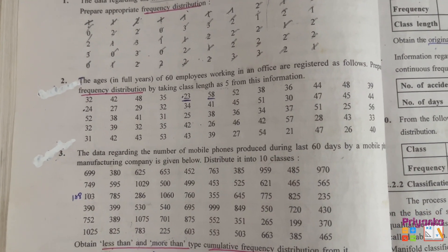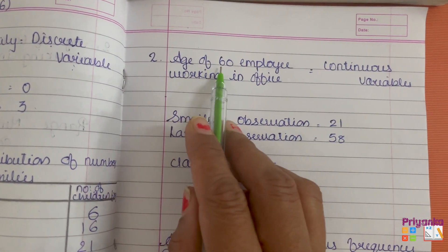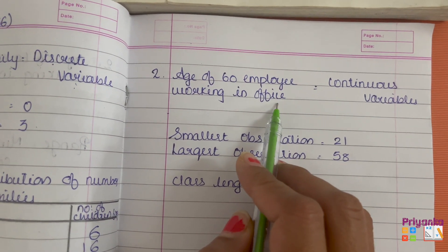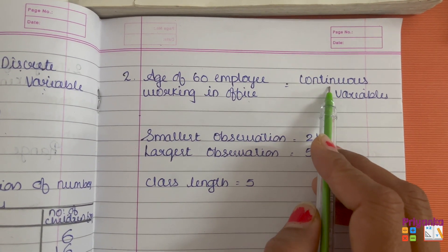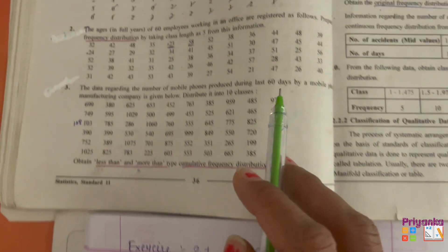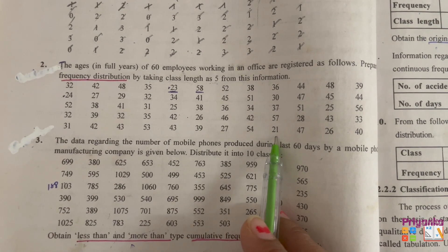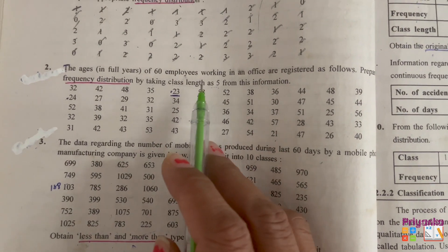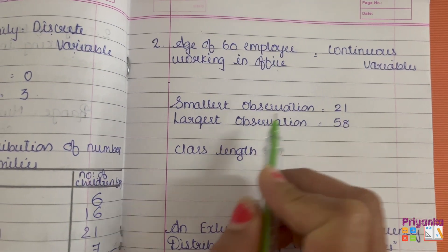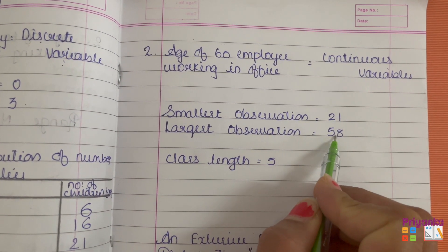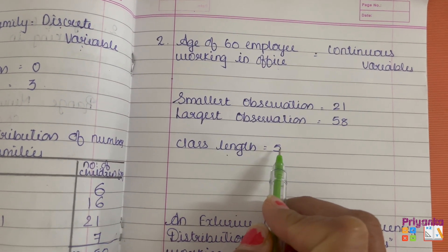As per the information given, the age of 60 employees working in the office is a continuous variable. From the data, the smallest observation is 21 and the largest observation is 58. We write down: smallest observation = 21, largest observation = 58.